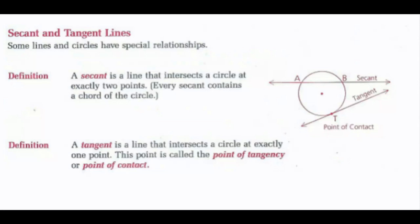First, looking at secant and tangent lines — some lines and circles have special relationships. A secant is a line that intersects a circle at exactly two points, and every secant contains a chord of the circle. Line AB is our secant line because it contains two points of the circle, A and B, contains chord AB, and touches the circle at exactly two points.